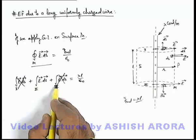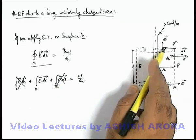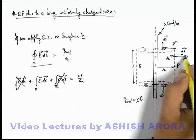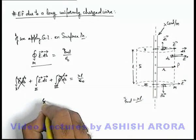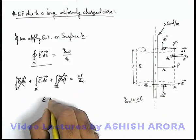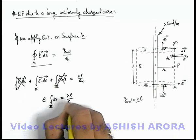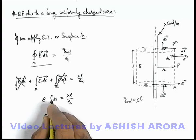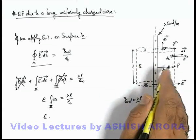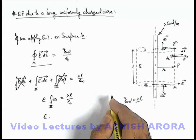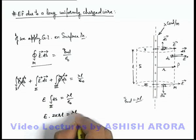The first and third integrals become zero because E and dS are perpendicular. For the second section, E and dS are parallel at every point, and by symmetry E is uniform at every point on the surface. So we have E times the integral of dS over section 2 equal to lambda·l divided by epsilon-not. The total area of the lateral surface is 2πrl, giving us E times 2πrl equals lambda·l divided by epsilon-not.